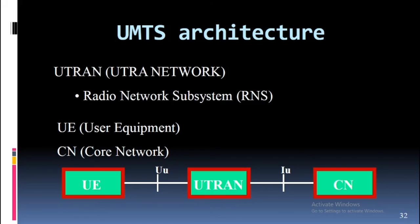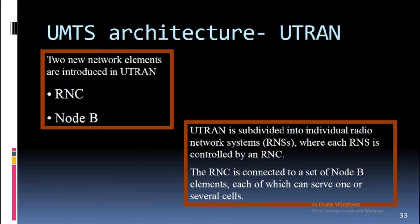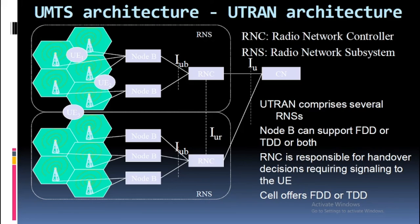UMTS architecture — UTRAN (UTRA Network) consists of Radio Network Subsystems (RNS). Two new network elements are introduced in UTRAN: RNC (Radio Network Controller) and Node B. UTRAN is subdivided into individual Radio Network Systems (RNSs), where each RNS is controlled by an RNC. The RNC is connected to a set of Node B elements, each of which can serve one or several cells. UTRAN comprises several RNSs. Node B can support FDD or TDD or both. The RNC is responsible for handover decisions requiring signaling to the UE.